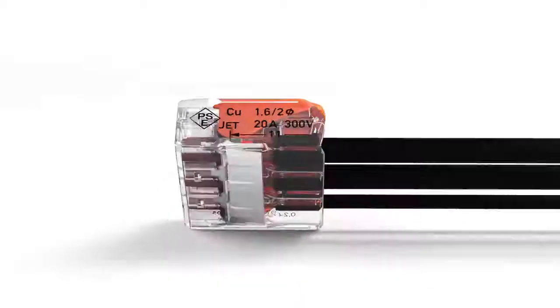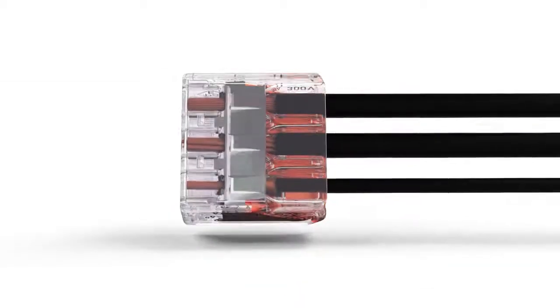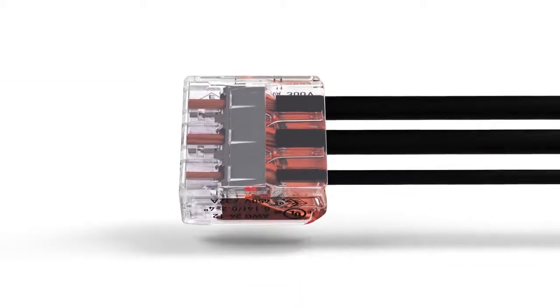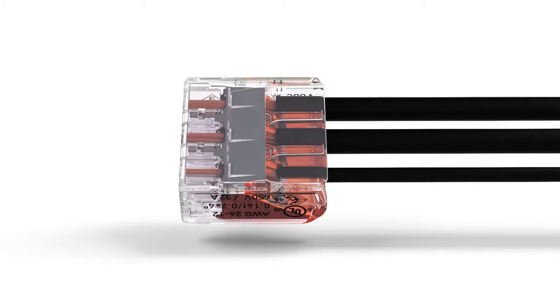The transparent housing enables visual inspection of the correct conductor position, providing a clear view of conductors that have not been inserted far enough or that have not been stripped to the proper length.